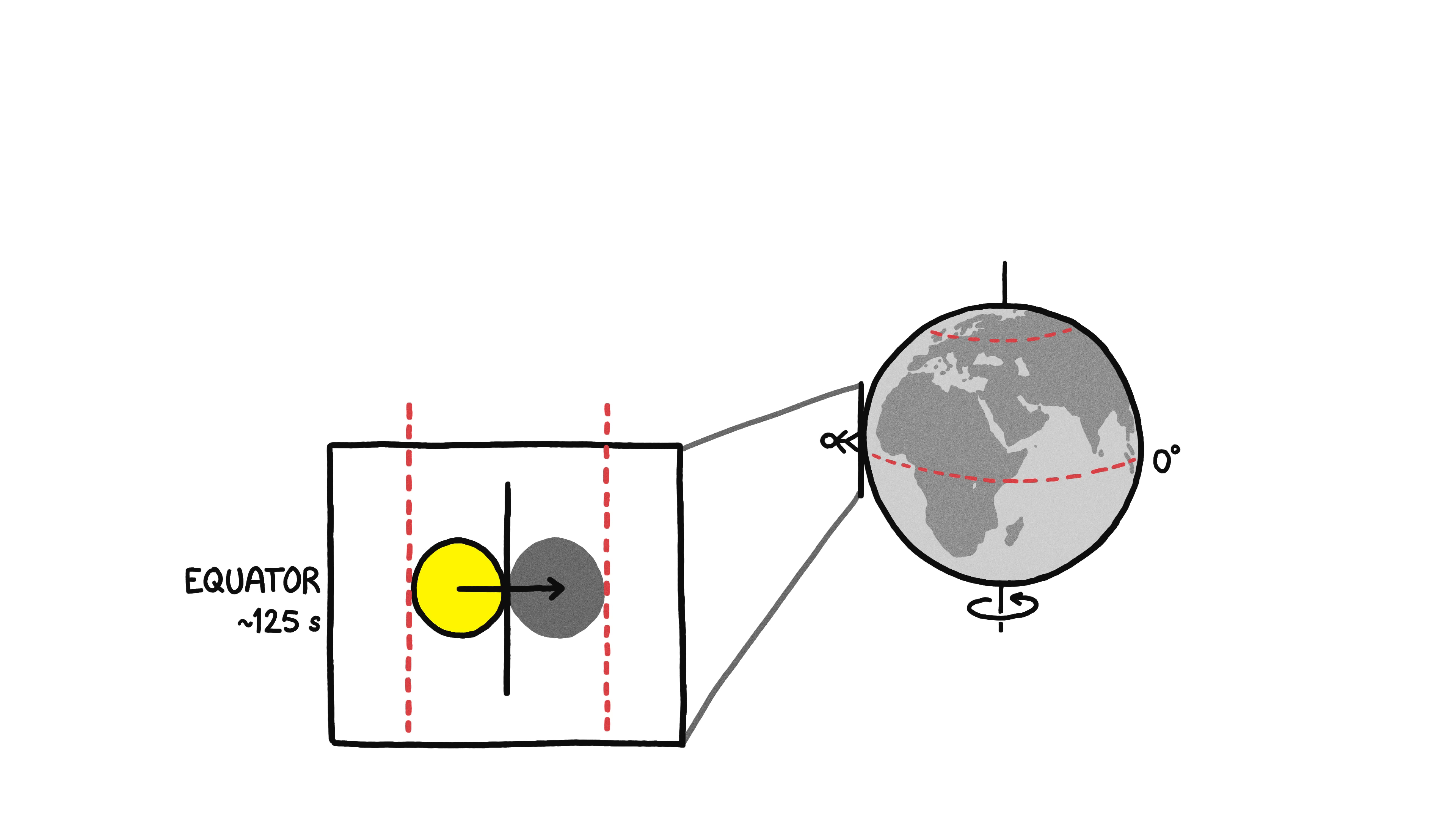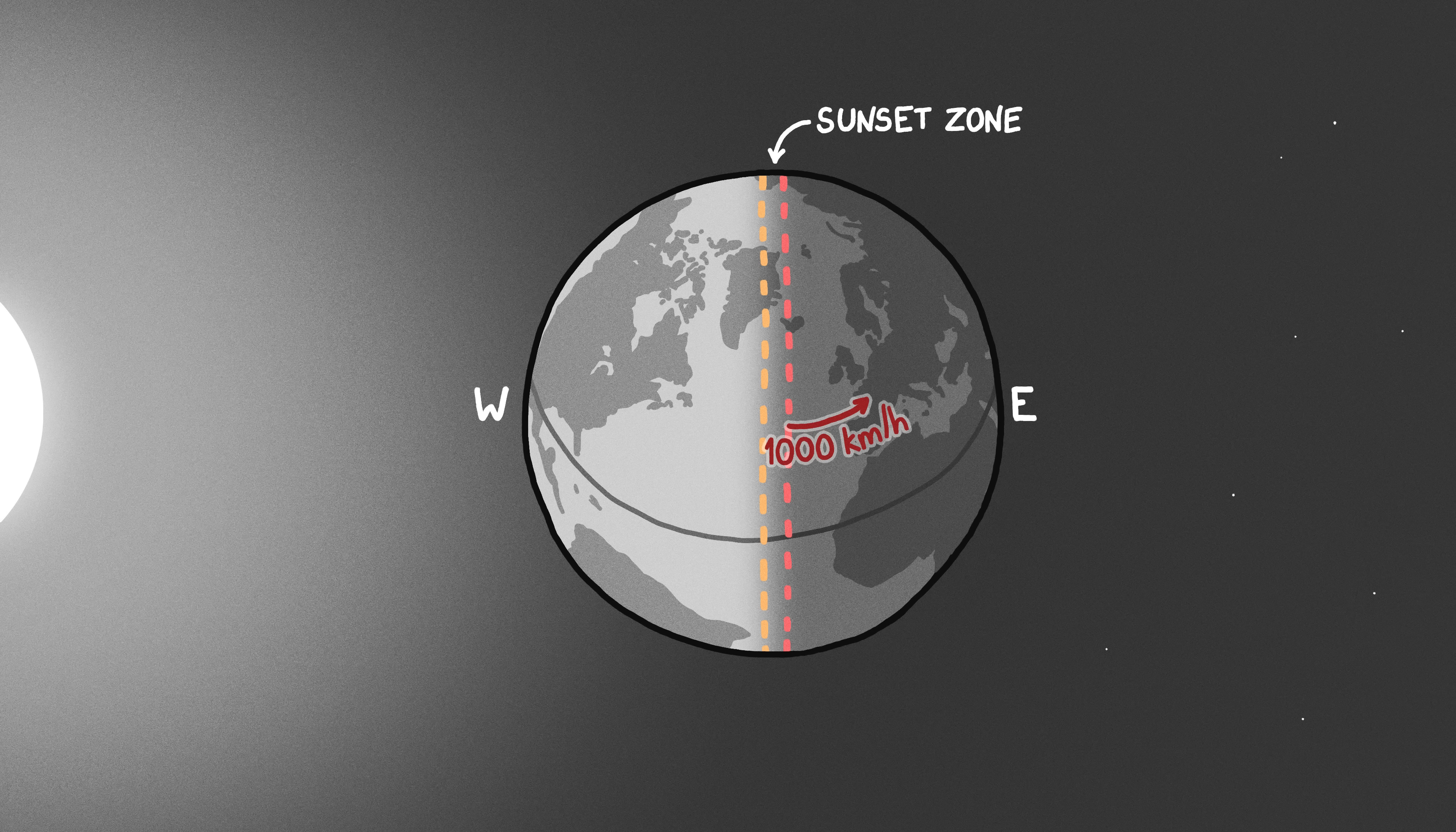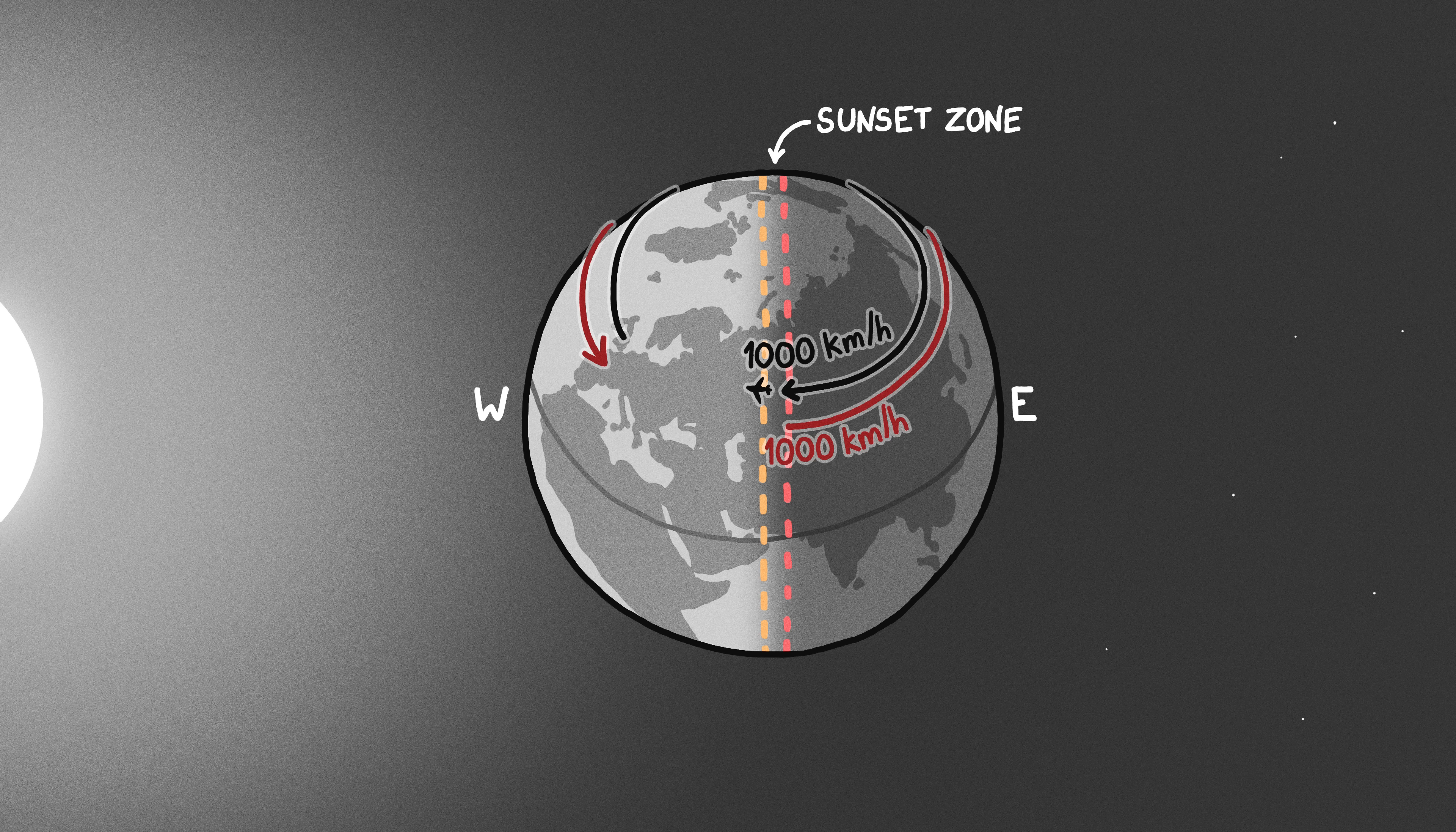At the equator, an average sunset is just over two minutes long. In places like London, England, it can take between three and five minutes. At London's latitude, the Earth's surface is moving from west to east at about a thousand kilometers per hour. So if you fly west in a commercial airliner, you can experience an arbitrarily long sunset, or at least you can until you run out of fuel 15 or 20 hours in.